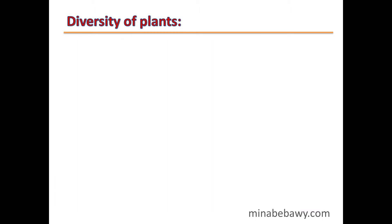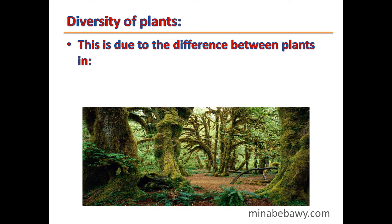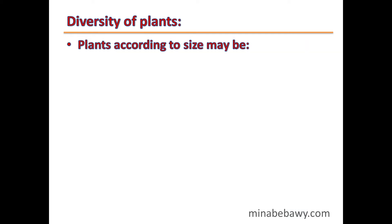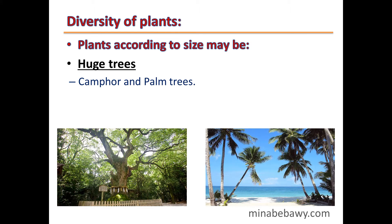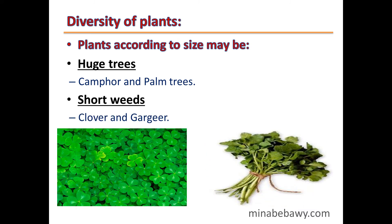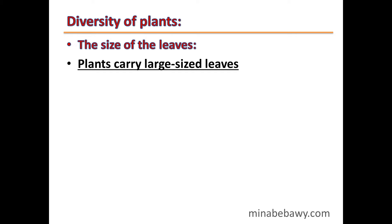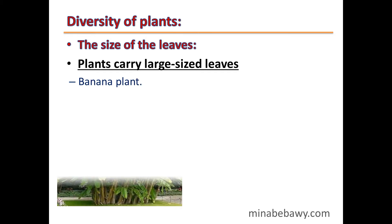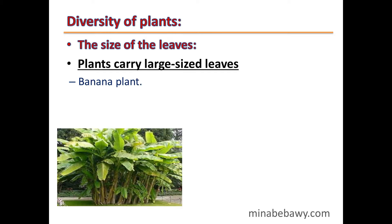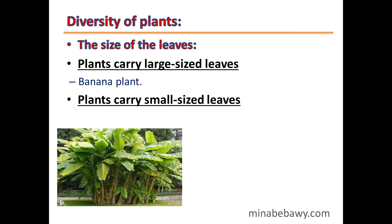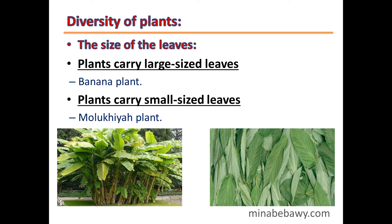Diversity of Plants. This is due to the difference between plants in their size and the size of their leaves. Plants according to size may be huge trees such as oak and palm trees, or short weeds such as clover and gargir. Plants may carry large-sized leaves such as the banana plant, or small-sized leaves such as the mulukhaya plant.